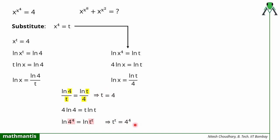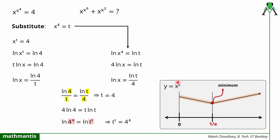We also need to show this is the only solution. By analyzing the function x raised to power x using application of derivatives — differentiating and finding the point of minima at 1 over e — we can see that for x greater than 1 over e the function is always increasing, and before that it is always decreasing. Since the function x raised to power x is increasing for t greater than 1 over e, there can only be one value of t satisfying the equation. A related video link is provided in the description where this function and a comparison inequality are discussed in detail.